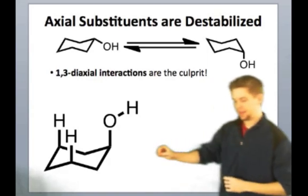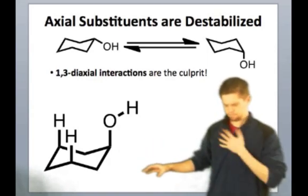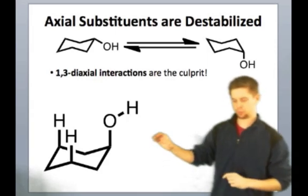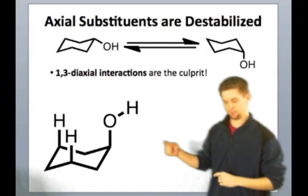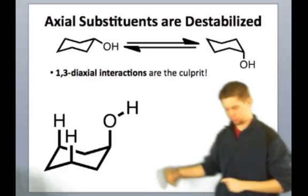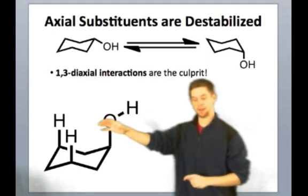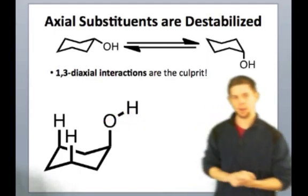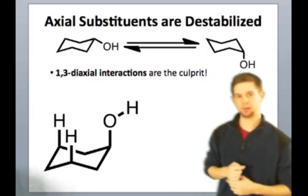Now imagine if we had the hydroxyl group equatorial. If that were the case, we wouldn't see this bumping, because as the OH group rotated, it would be rotating out here in free space and not bumping into those axial hydrogens. Because those are two carbons away at the three position relative to the substituent, we call those destabilizing interactions one-three-diaxial interactions.